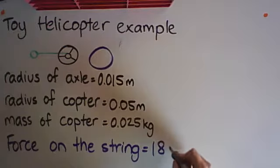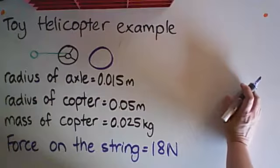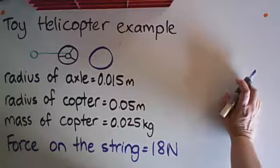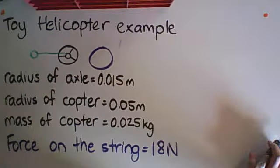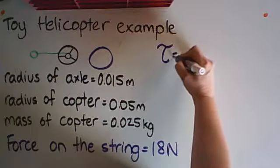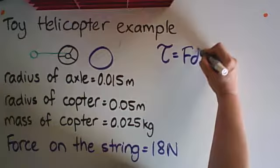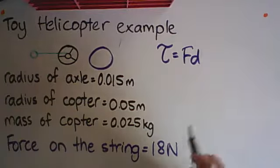I'm going to solve this in two steps. I can't easily get from F to angular acceleration, but there is an intermediate step I can take. I know that the torque applied, τ, is equal to the force times the distance. I happen to have the force already—18 newtons—and I have the distance as well.